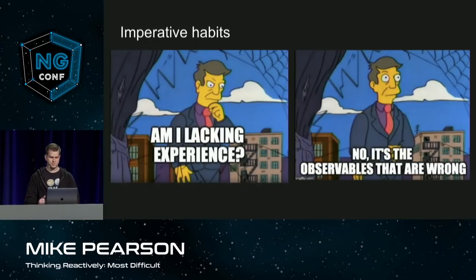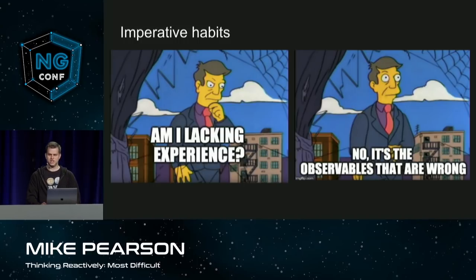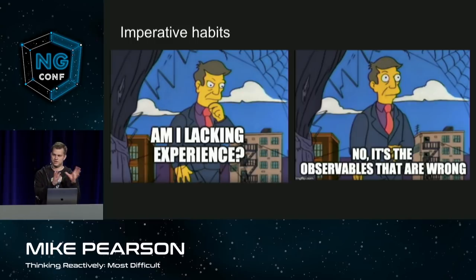Usually that's kind of my go-to approach — blame the code, like Skinner here: am I lacking experience? No, it's the observables that are wrong. But actually that wasn't the problem. The problem was my experience. My experience was mostly with imperative architecture, and so I was thinking of it as an imperative app when it was actually structured like a reactive app.